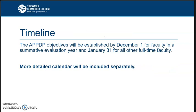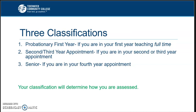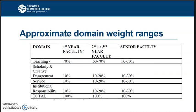The timeline, as mentioned, is a calendar year. Your APPDP objectives should be established by December 1st of the prior year, and a more detailed calendar will be provided in class. If you are in your first year of full-time probationary teaching, you're in a first-year appointment; second or third year is a second or third year appointment; and everything after that you are considered a senior. Your classification will determine how you are assessed. This is where Appendix C1, C2, and C3 comes in, because the domains are weighted differently for each classification.